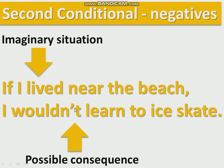Second conditional negatives. For example, if I lived near the beach, I wouldn't learn to ice skate. This is easy — we just add 'not' to the end of 'would': wouldn't, the contraction, or 'would not'. Very easy in the negative.